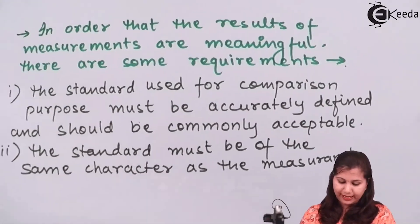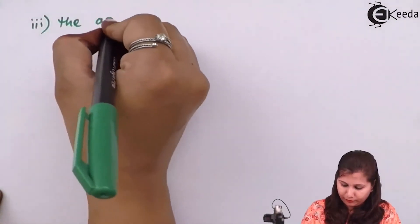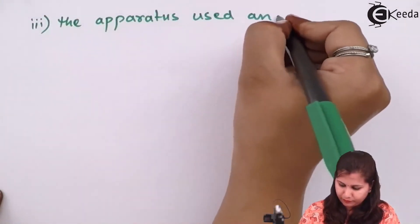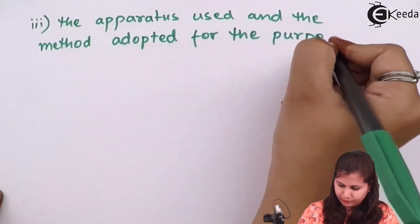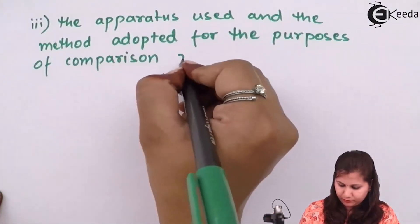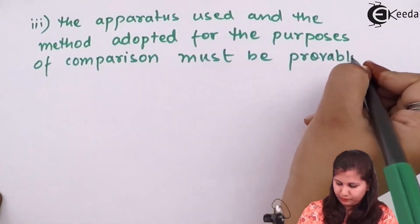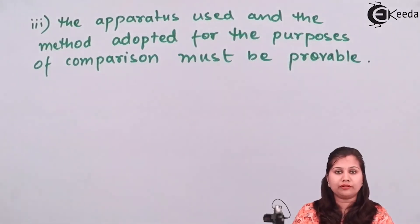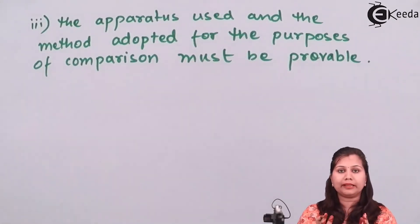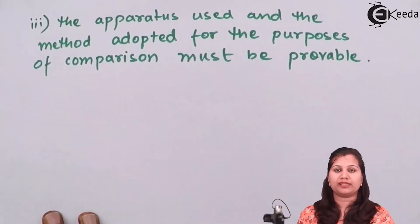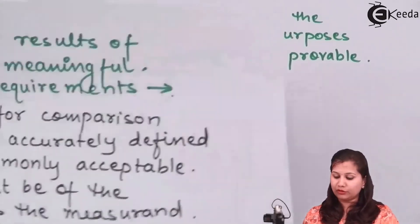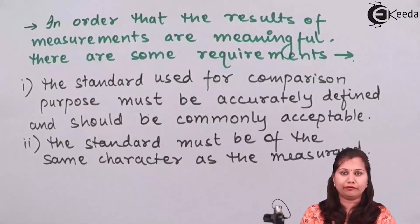The third requirement is that the apparatus or method used for the comparison must be provable — it must be verifiable in reality — and the apparatus should also be accurate. Only then will the measurement results be accurate. These are the three requirements in order to get meaningful results from measurement.